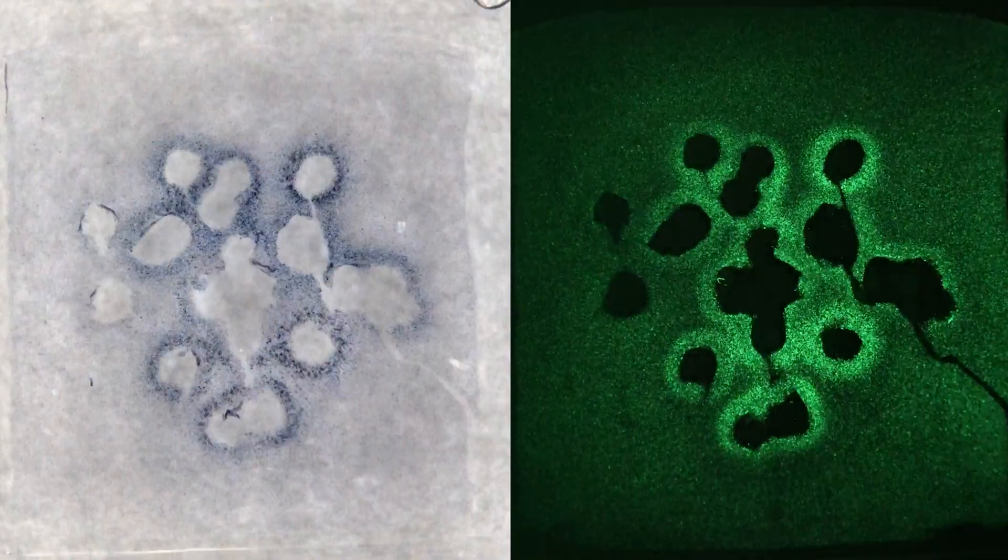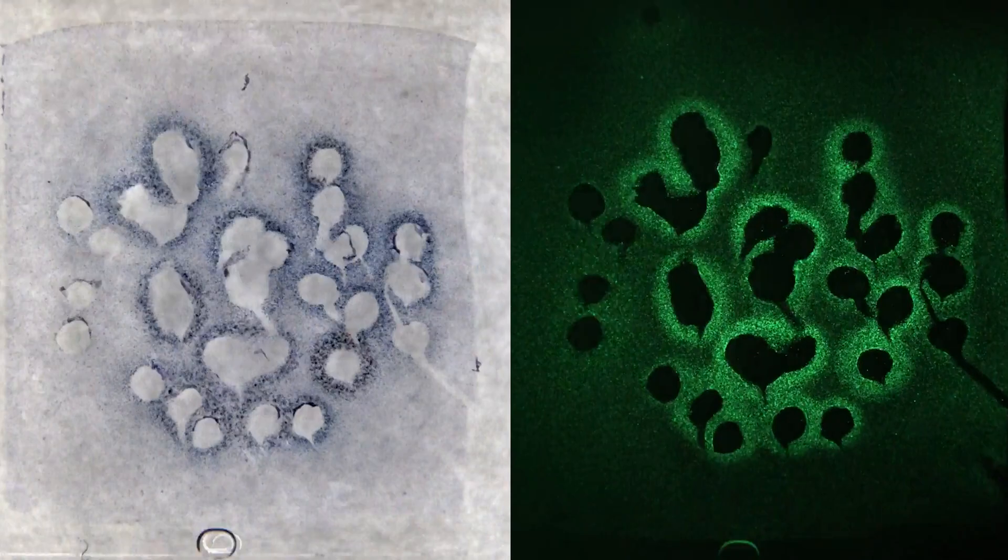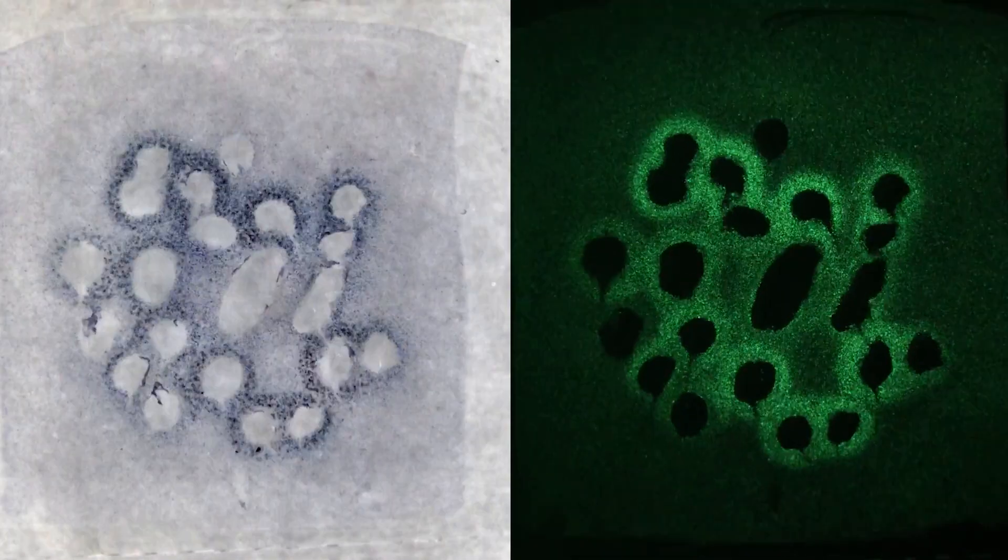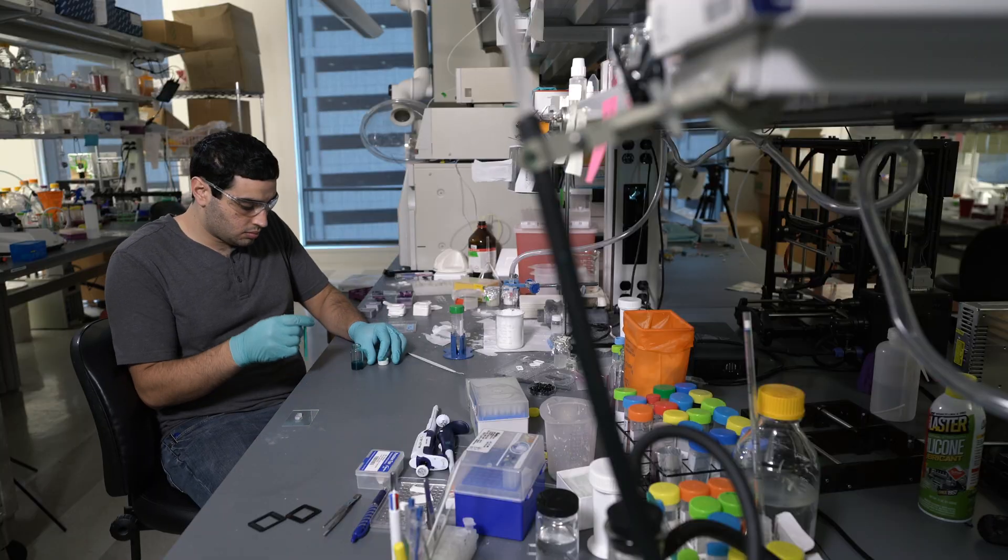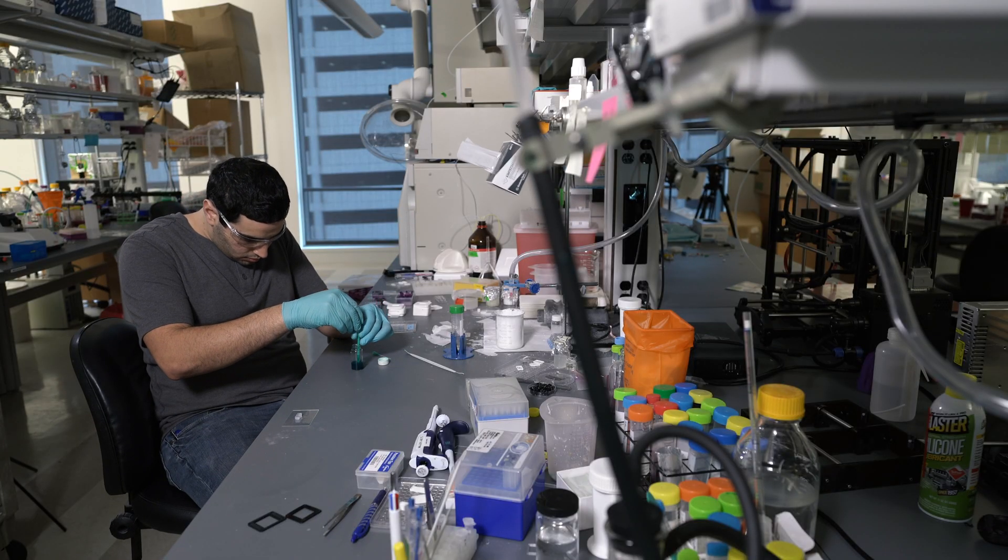And so one of the big constraints that's preventing us from getting there right now is delivering enough oxygen and nutrients to all those cells across that large volume of tissue. And the way that nature solves this problem is through very complex vascular networks.